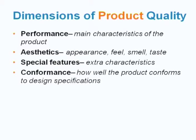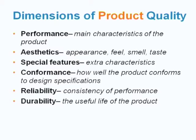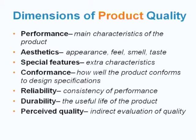Conformance is like how well the product conforms to the design specification. Reliability is the consistency of performance. Durability refers to the useful life of the product — useful life in terms of resistance to wear or deterioration and need for repair. Perceived quality is the indirect evaluation of quality, such as the top or high rating of a product.